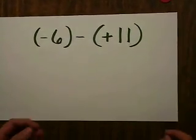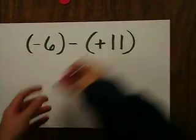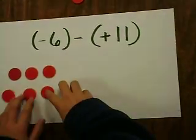The first thing you have to do when subtracting integers is model the first integer. So, six red tiles is negative six.